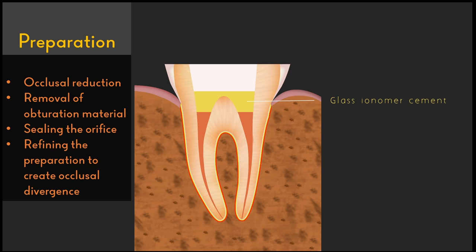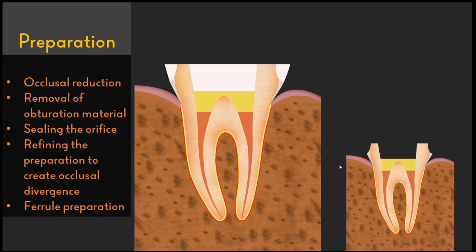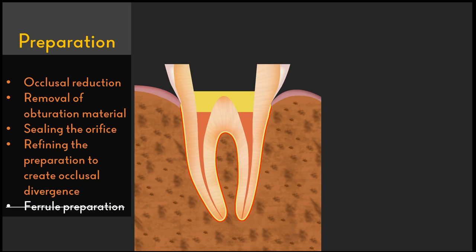After sealing the orifice with glass ionomer cement, the remaining excess cavity — the internal tooth cavity — has to be refined to an occlusal divergence. This can be done with a tapered fissure bur, preferably one with a greater diameter. Make sure there are no undercuts present in the preparation. After finishing the internal preparation, a circumferential ferrule has to be prepared around the remaining tooth structure, using a round and tapered fissure bur.